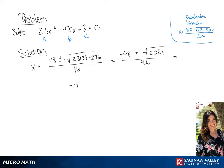We can simplify this even further. So 2,028 is going to be 4 times 169 times 3. We can take the square root of 4 and 169.